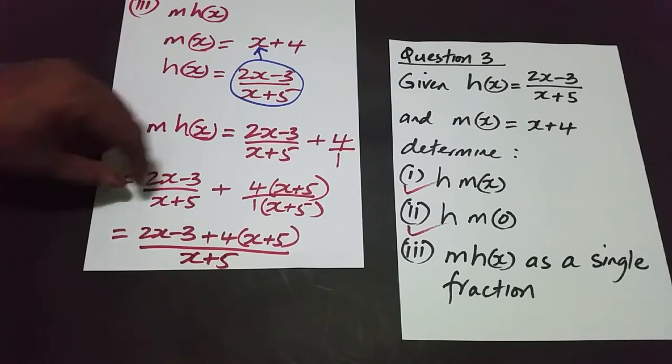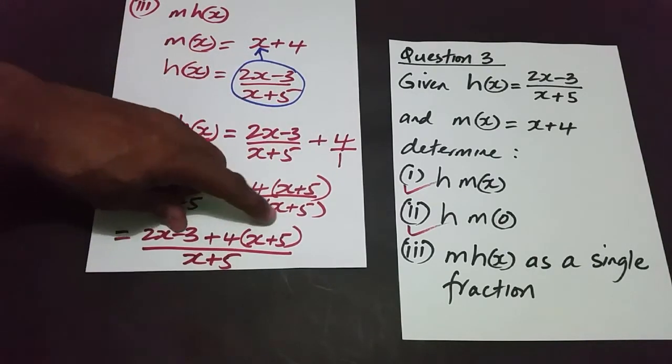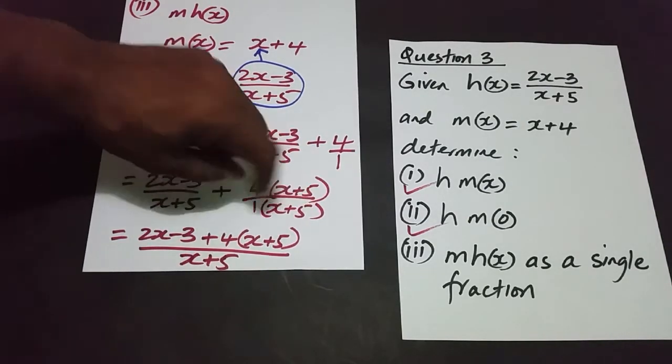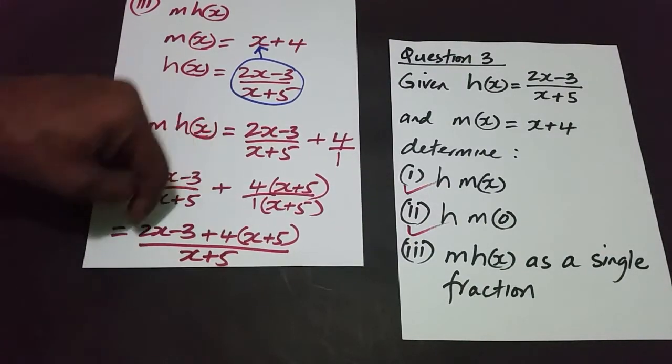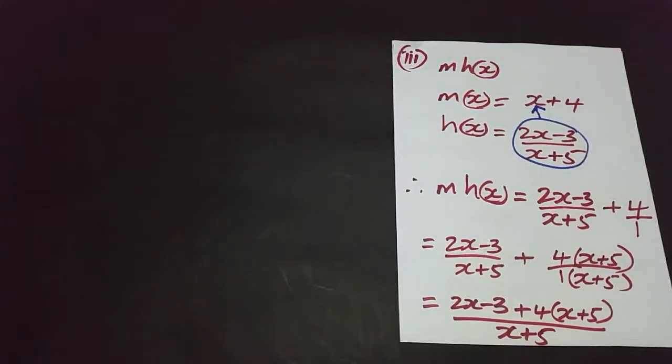So we're just going to always leave the expansion until after you've established the single fraction. And the way that I can have a single fraction here is because the denominators now are going to be the same, because 1 times x plus 5 is going to be x plus 5. So both fractions have the same denominator. I'm going to put that there and then add them together.